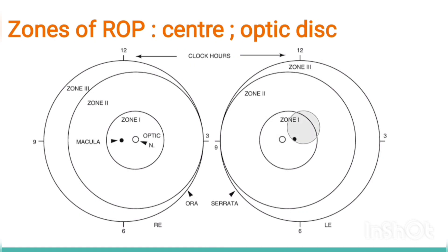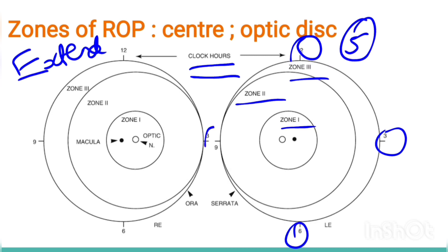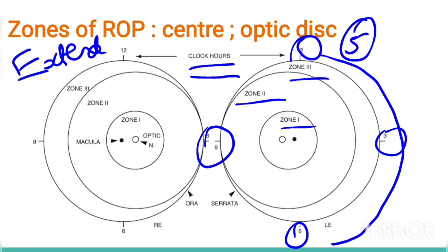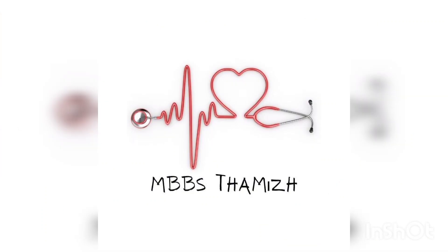We have covered three zones and five stages of ROP. The extent of ROP is determined by clock hours — how many clock hours are involved — which further helps determine the severity of the disease.